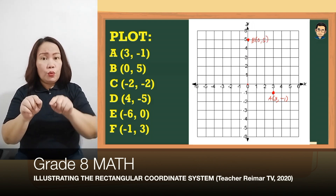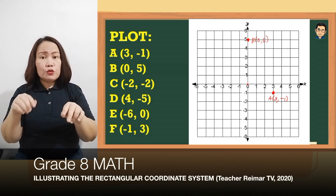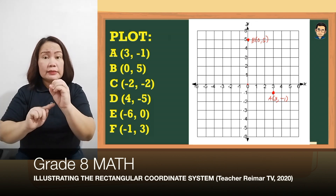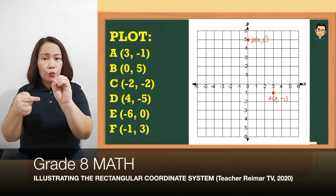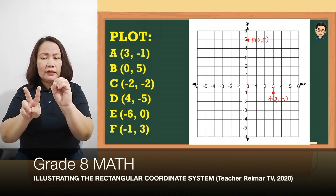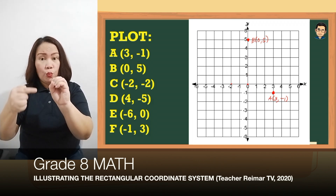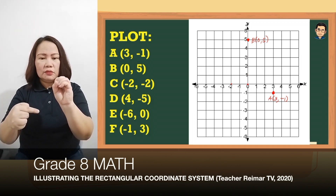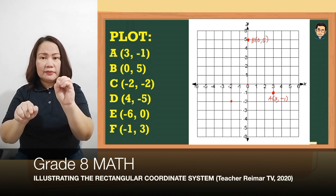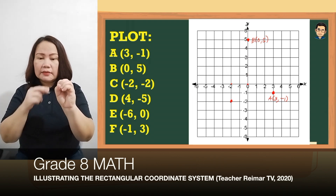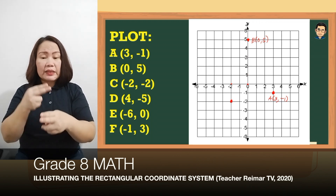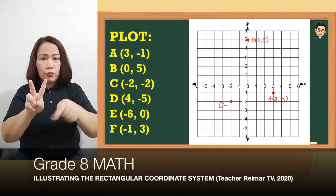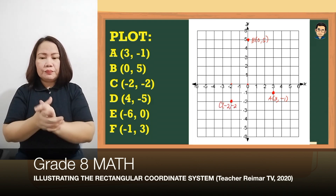Next, (-2, -2). Start tayo sa origin, then mag-move tayo to the left kasi negative — ito po yung negative 2. And then move tayo ng 2 downward, pababa. So nandito po yung (-2, -2), magkatapat po sila. Name natin siya as C (-2, -2).